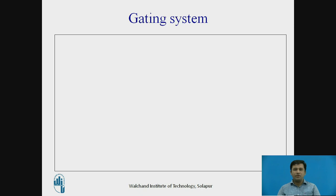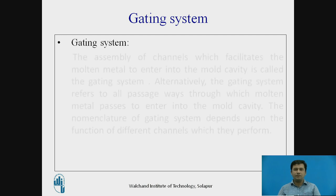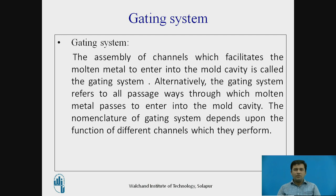Now first we'll look at what is a gating system. The assembly of channels which facilitates the molten metal to enter into the mold cavity is called the gating system. Alternatively, the gating system refers to all passageways through which molten metal passes to enter into the mold cavity. The nomenclature of the gating system depends upon the function of different channels which they perform.